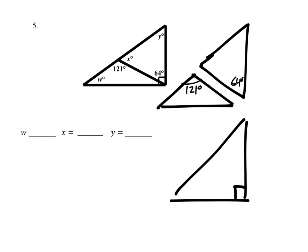This is the information that is given. It may also be helpful, when solving for X, to look at it as a straight angle pair. That's 121 degrees. So to solve for X, we take 180 and subtract the 121, and that gives us X at 59 degrees.